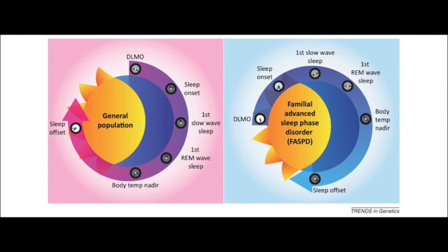This mutation alters the site in the HPER2 protein where casein kinase 1 epsilon acts. Normally, this enzyme would add a phosphate group to the HPER2 protein. These phosphate groups target the protein for degradation.